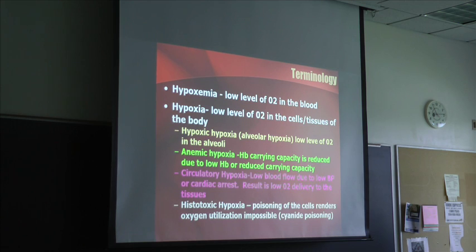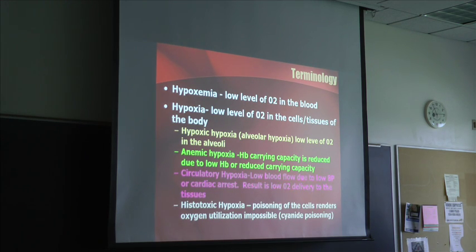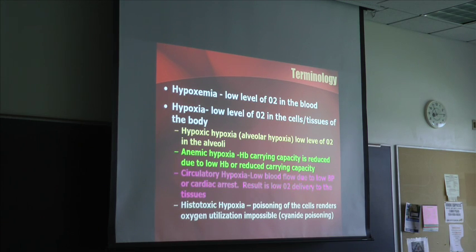The next one is circulatory hypoxia. There's low blood flow due to low blood pressure or cardiac arrest, and the result is low oxygen delivery to the tissues. If you have low blood flow, you don't have blood carrying a fresh supply of oxygen to the tissues, and the tissues become hypoxic. That makes sense — circulatory hypoxia.